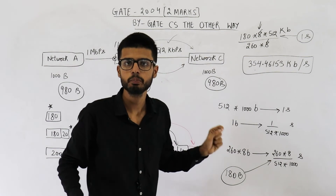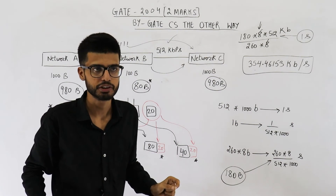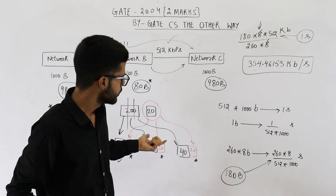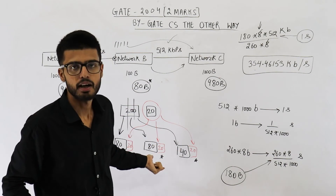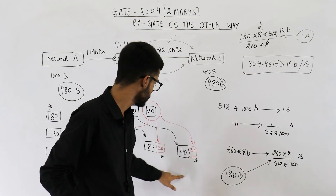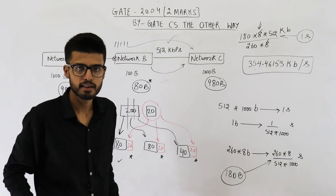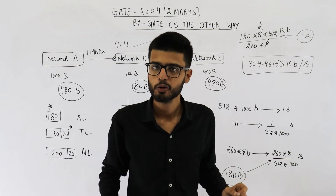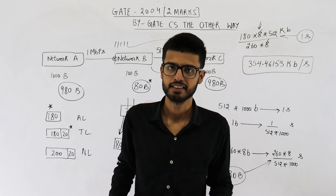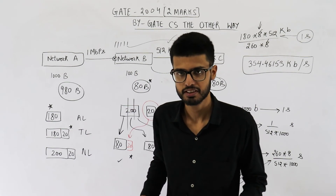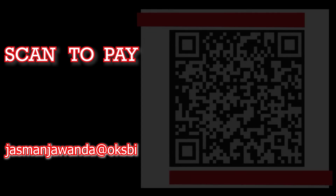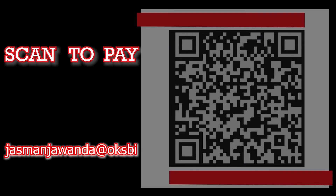So that is the answer to part B of the question. The answer to part A was 260 bytes total data delivered to the IP layer. I hope you have understood the question. Thank you very much for watching this video.